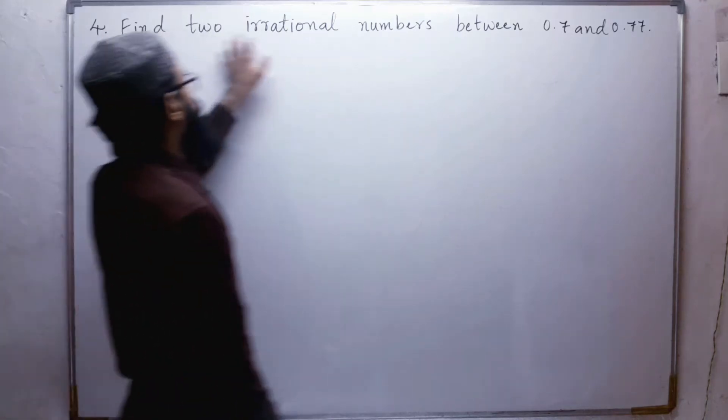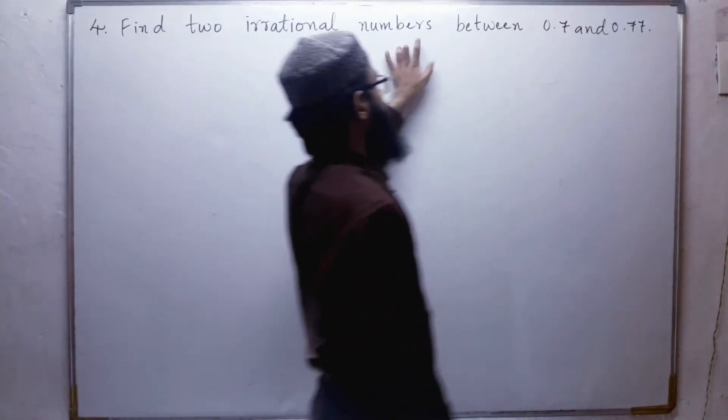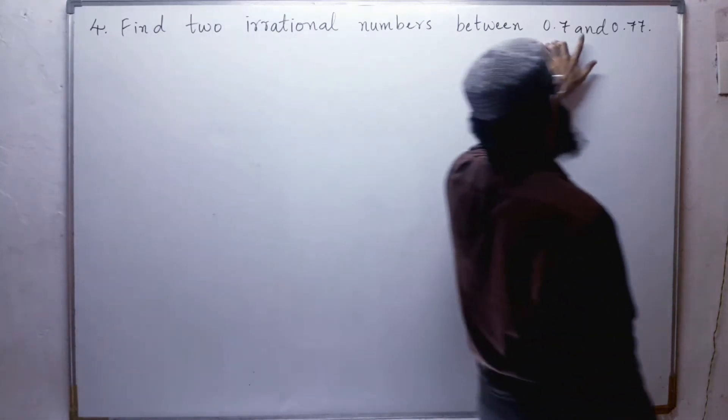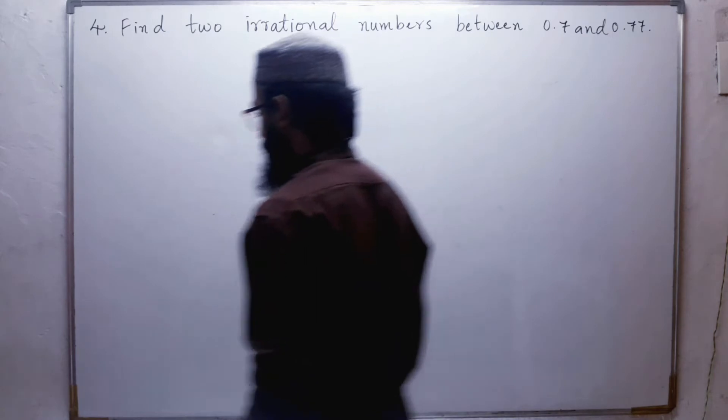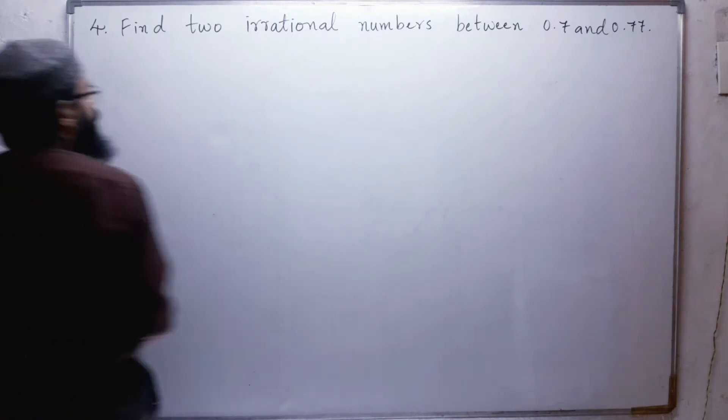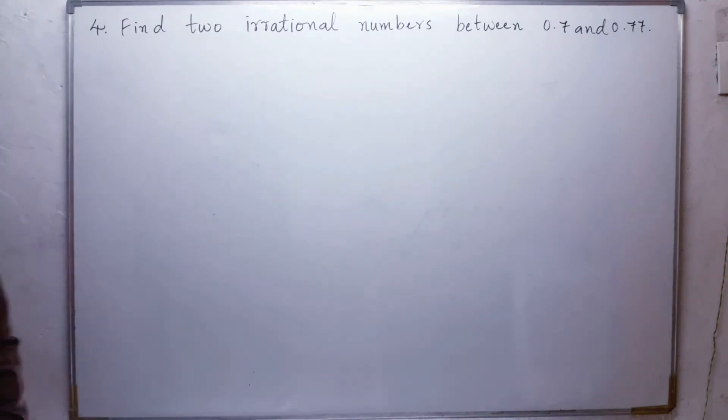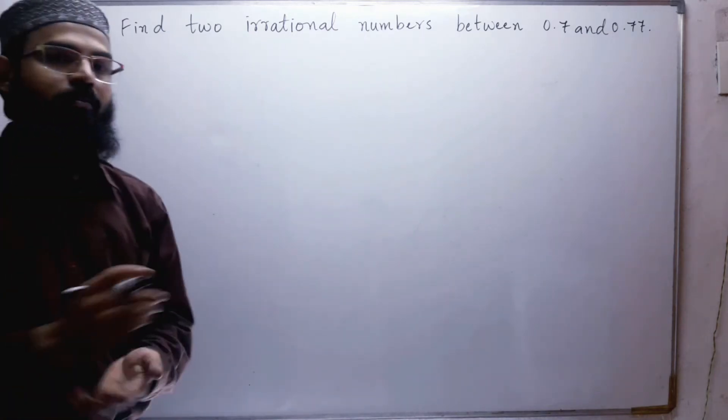Fourth problem: find two irrational numbers between 0.7 and 0.77. So we have to find two irrational numbers.